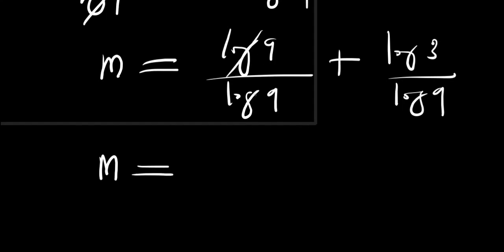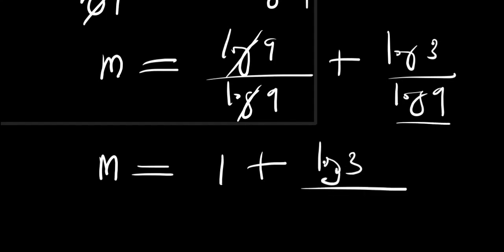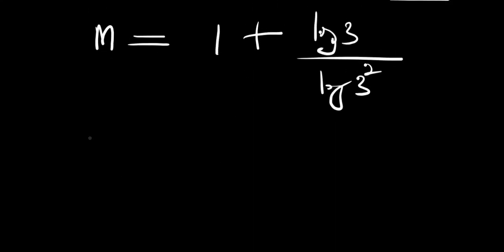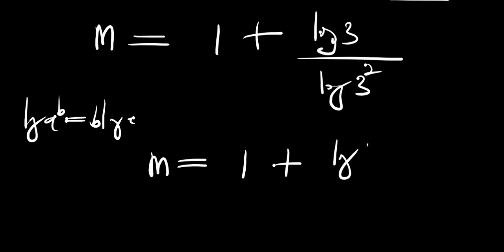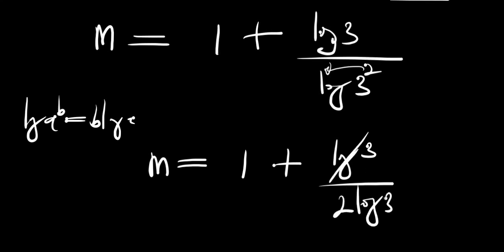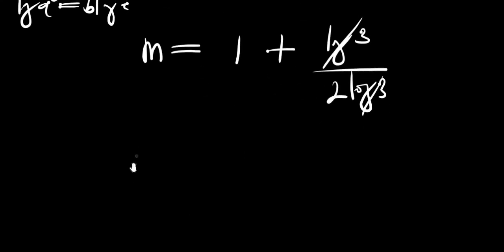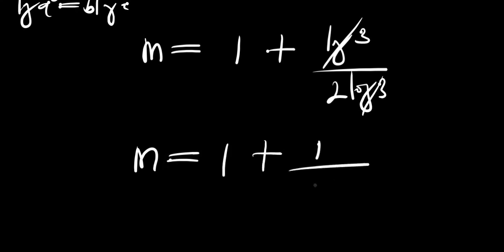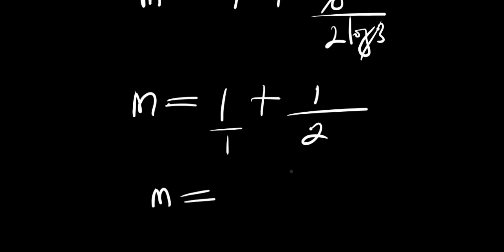So we have m equals — the first fraction cancels to 1, plus log of 3 divided by log of 9. We can write log of 9 as log of 3 squared. Using the power rule, the 2 comes in front: log of 3 divided by 2 times log of 3. The log of 3 cancels, giving us m equals 1 plus 1 over 2. Multiplying out: 2 over 2 plus 1 over 2 equals 3 over 2.